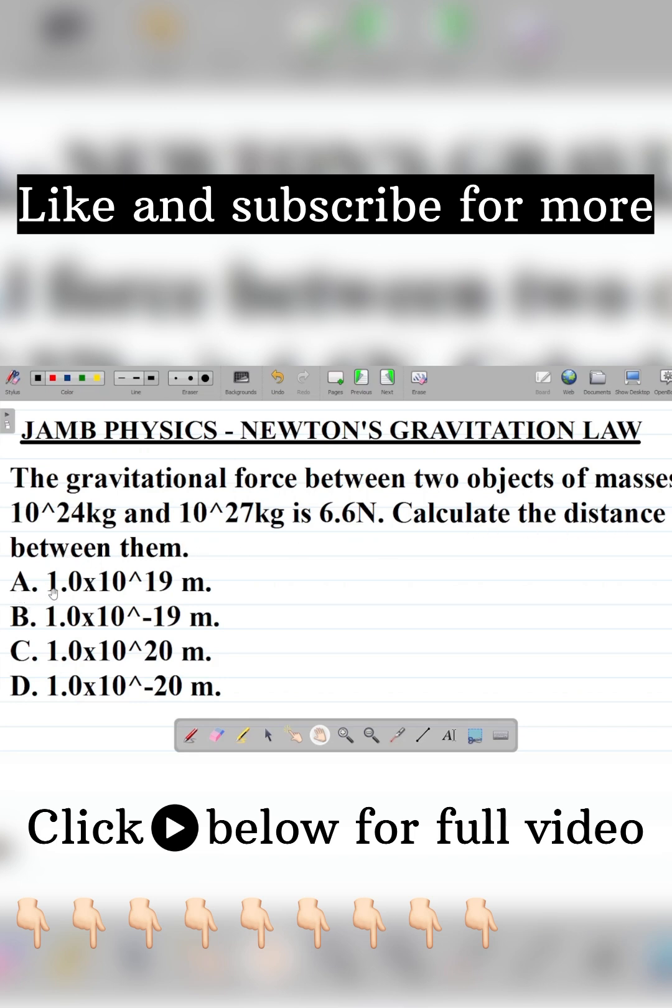You're given A as 1.0 times 10 to the power 19 meters, B is 1.0 times 10 to the power minus 19 meters, C is 1.0 times 10 to the power 20 meters, and D is 1.0 times 10 to the power minus 20 meters.